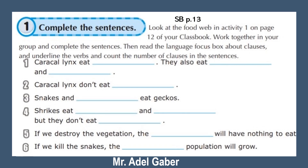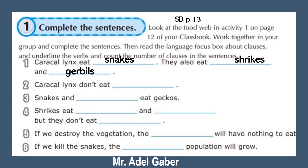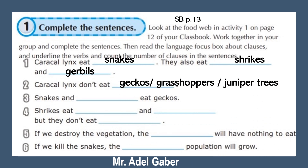Have you finished? Check your answers. Sentence number one: Caracal lynx eat snakes. They also eat shrikes and traples. Two: Caracal lynx don't eat geckos, grasshoppers, or juniper trees.